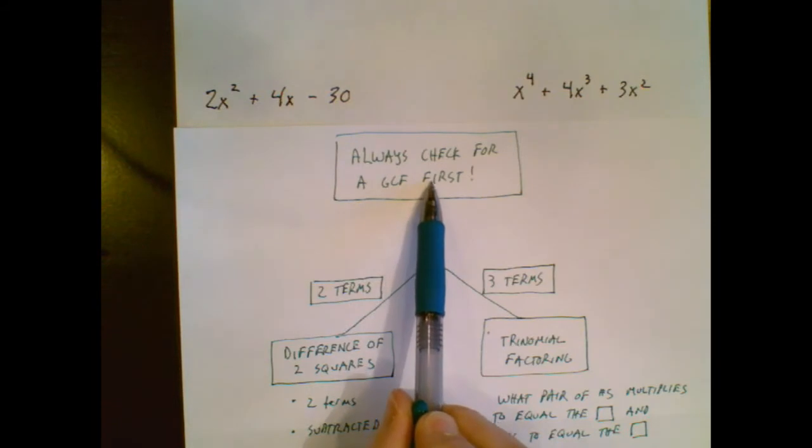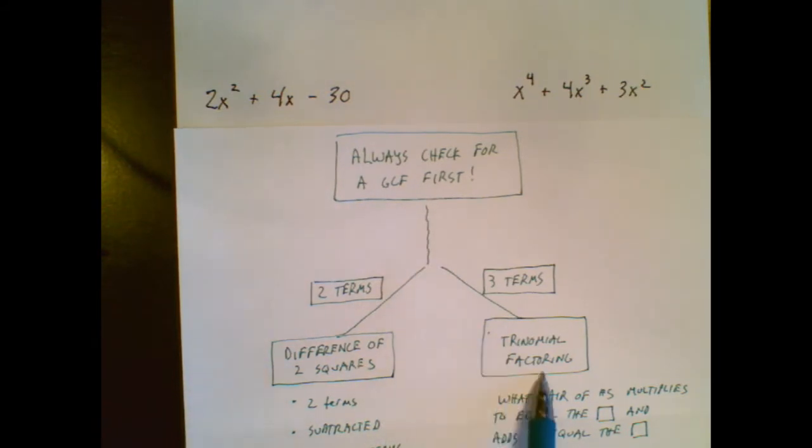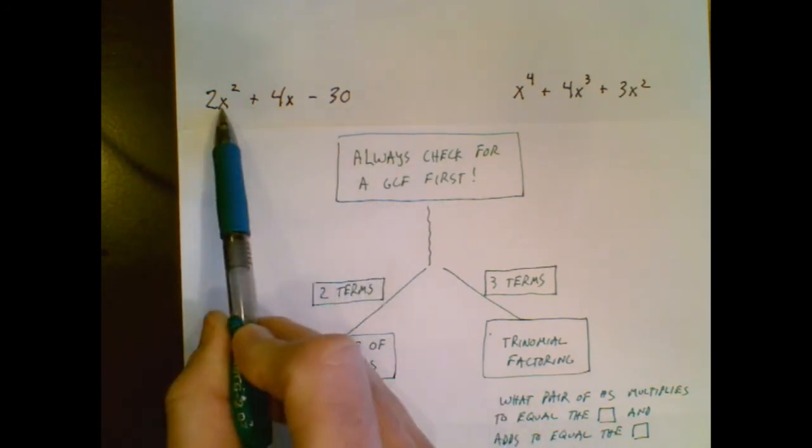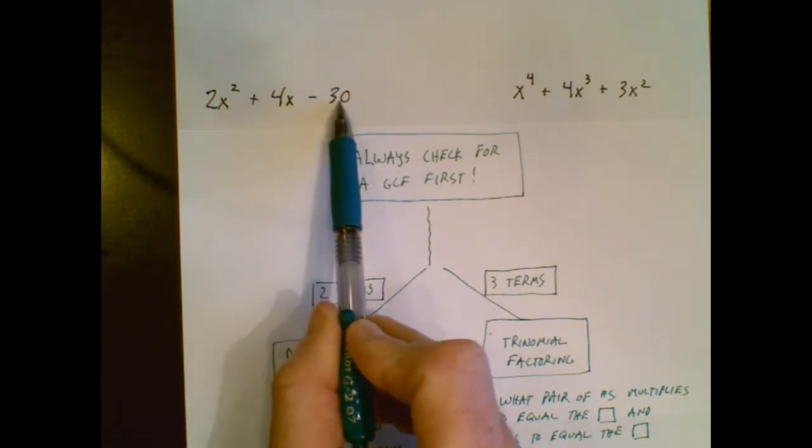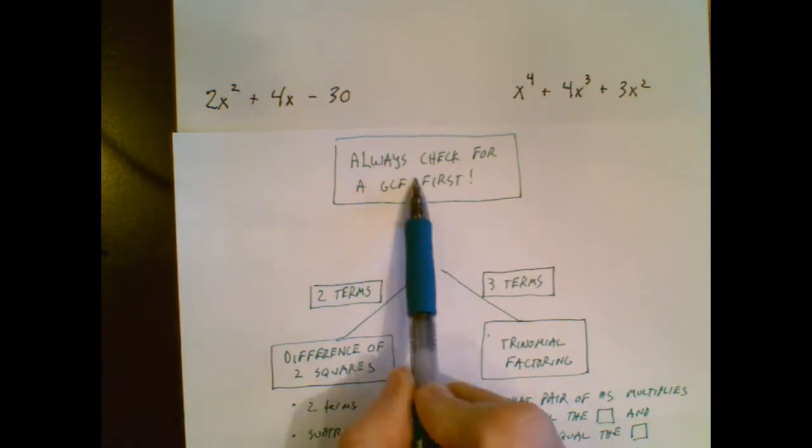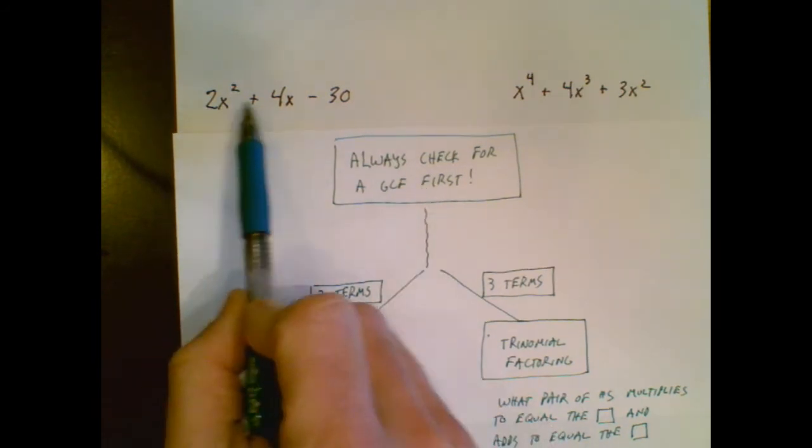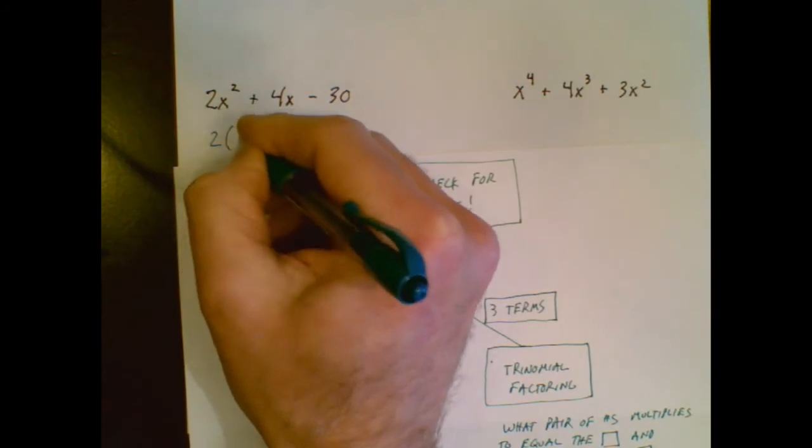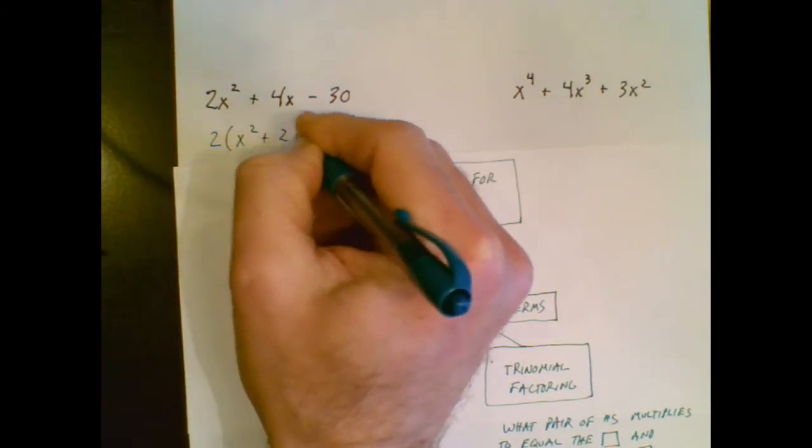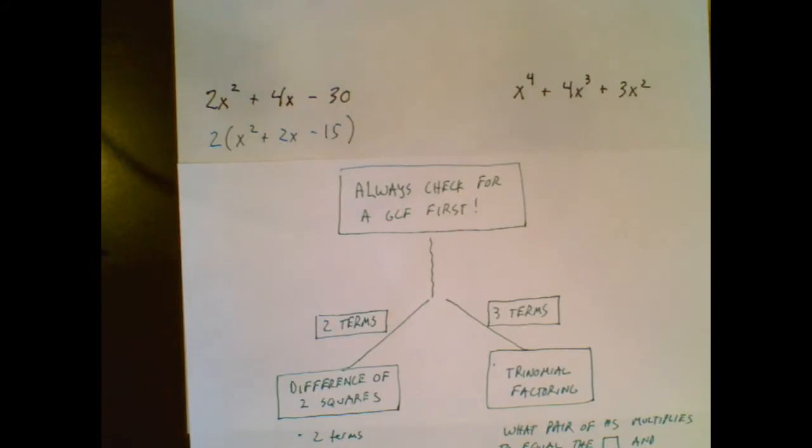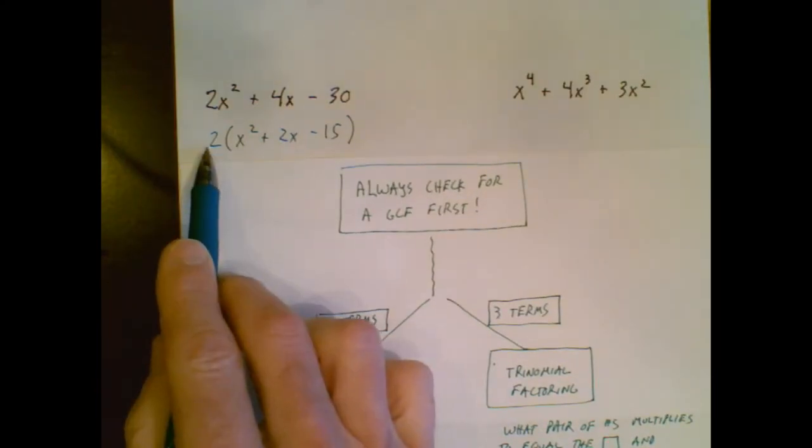These next two are going to get a little bit murkier. We're still going to follow this flow chart. But in these two examples, we're going to end up going down this side of the flow chart. So I take a look at this one, and I say, hey, they all don't have a variable. So that means I can't have a variable in my GCF. But between a 2, a 4, and a 30, a 2 multiplies into every piece.